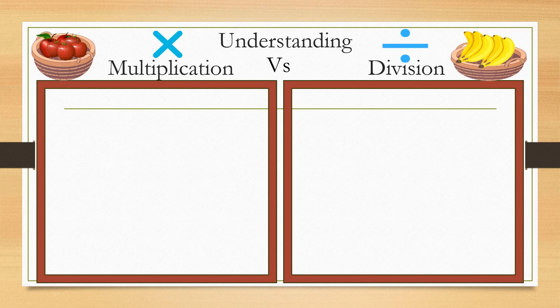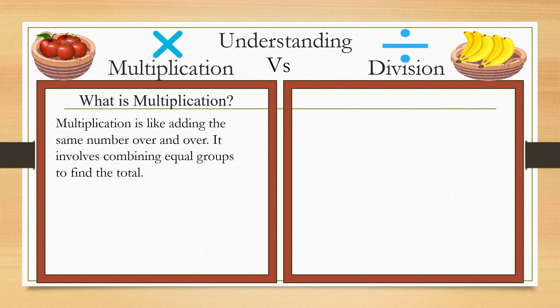What is multiplication? Multiplication is like adding the same number over and over. It involves combining equal groups to find the total.